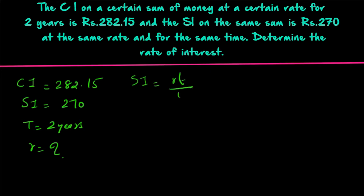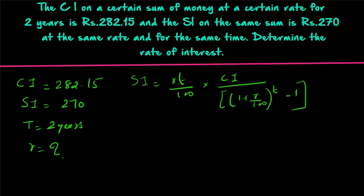The formula is: simple interest equals r×t/100 into compound interest divided by (1 + r/100)^t minus 1. Here r appears in the numerator as well as in the denominator. You have simple interest, compound interest, and time, but trying to find r from this equation will be very lengthy and not feasible for competitive exams.